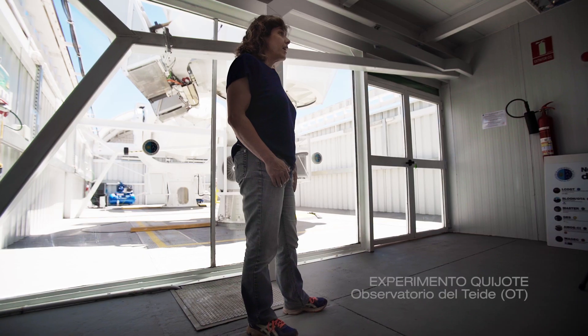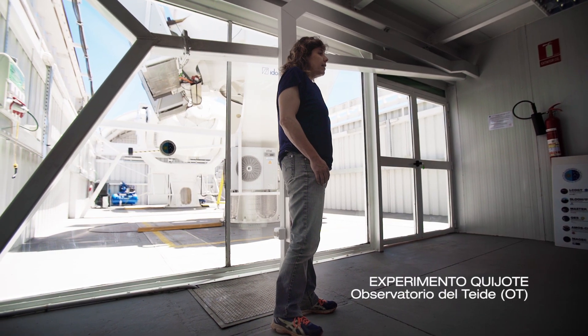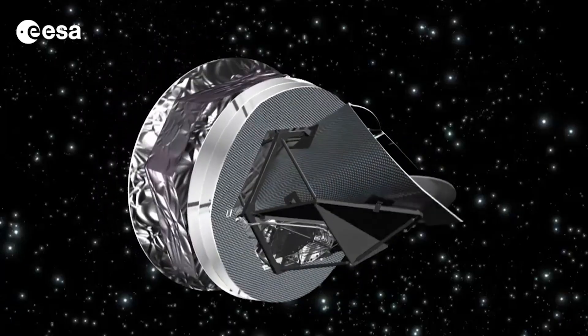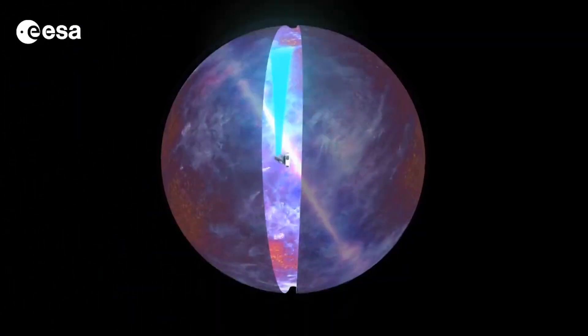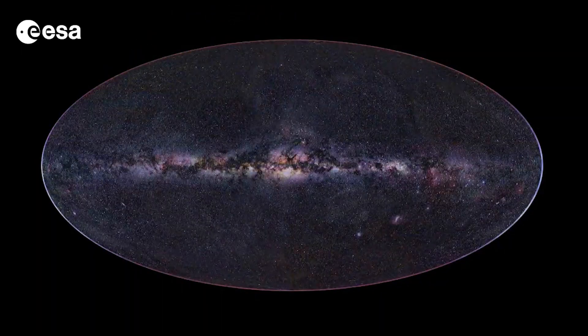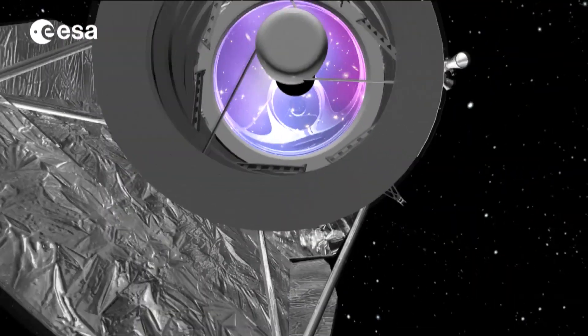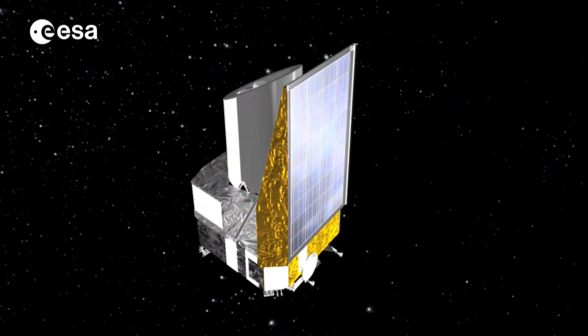Menos 250 grados centígrados es poco por encima del cero absoluto: una temperatura muy difícil de conseguir. Quijote es un proyecto muy ambicioso porque pretende aportar un grano más al esclarecimiento del origen del universo y de todo lo que contiene, incluido nosotros mismos. También se ha desarrollado tecnología para misiones espaciales: la misión Planck de la Agencia Espacial Europea contó con participación del IAC, y para el futuro el instituto estará involucrado en la misión Euclid, un nuevo satélite con el objetivo de caracterizar la energía oscura.